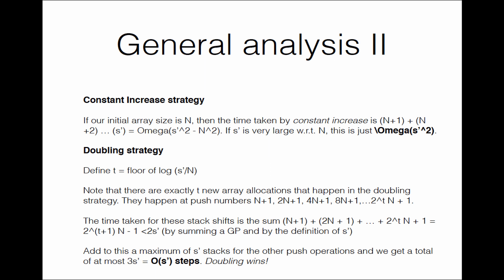For the doubling strategy we need a more fine-grained analysis. Let t be defined as the floor of log(s'/n). This means that 2^t is the highest power of 2 smaller than s'/n. There are exactly t new array allocations in the doubling strategy, happening at push numbers n+1, 2n+1, 4n+1, and so on up to 2^t · n + 1. These are the only points at which the doubling strategy allocates a new array and copies elements, and we now analyze carefully the total number of array operations at these points.